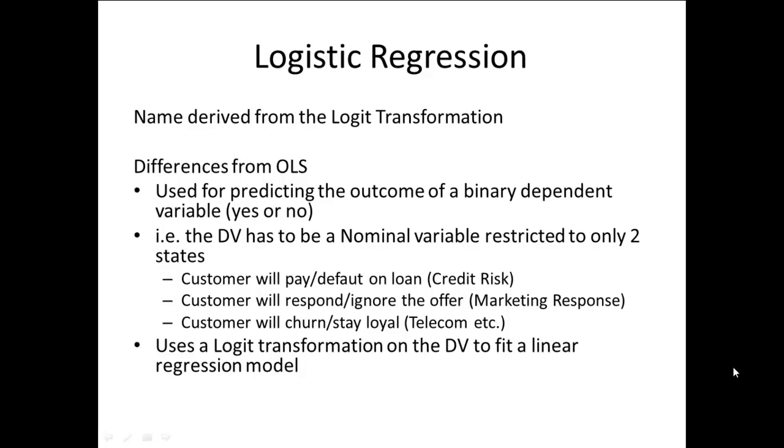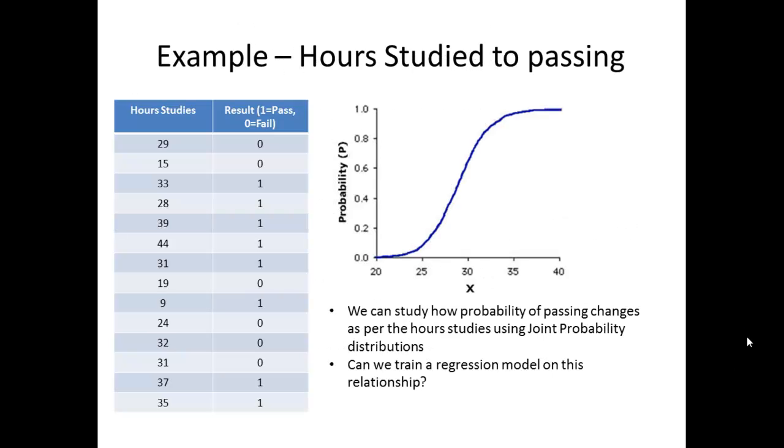So how does logistic regression actually work? This is a very basic example where we are trying to predict whether a student will pass or fail on an exam based on the number of hours studied. Common sense tells us that if you do not study for an exam at all, you are unlikely to pass, and if you do study for an exam, depending on how much you study, you are likely to pass. This particular behavior, however, does not follow a linear trend. First of all, getting linear trends in probabilities is very difficult. We are looking at the probability of passing or failing.